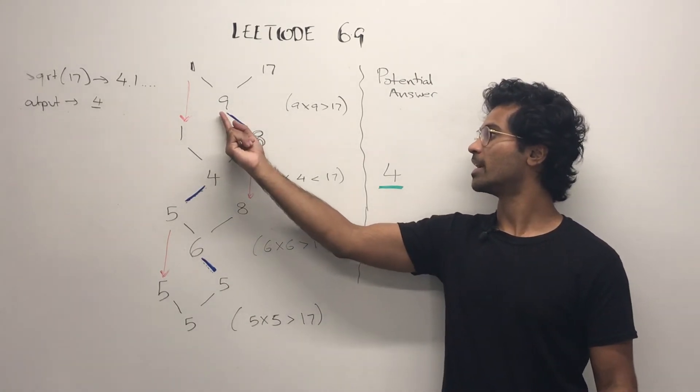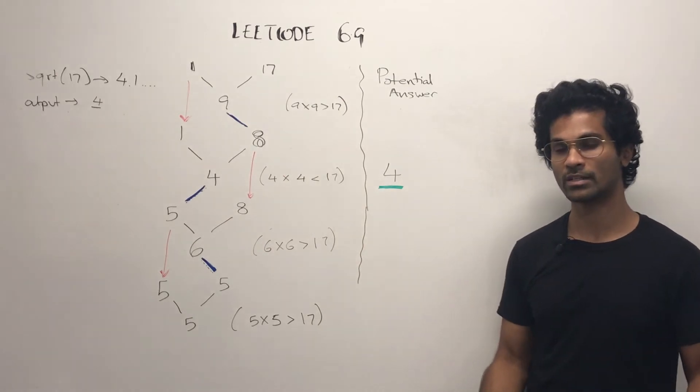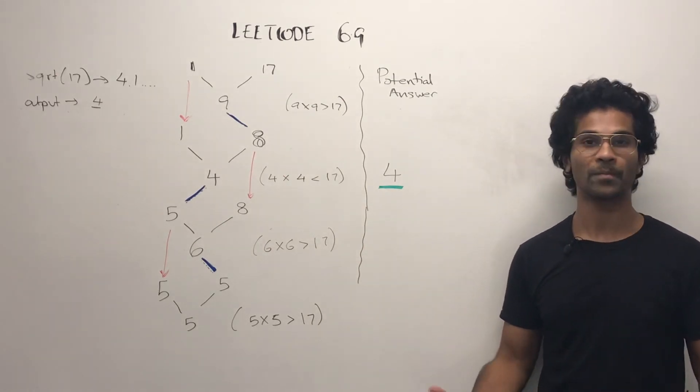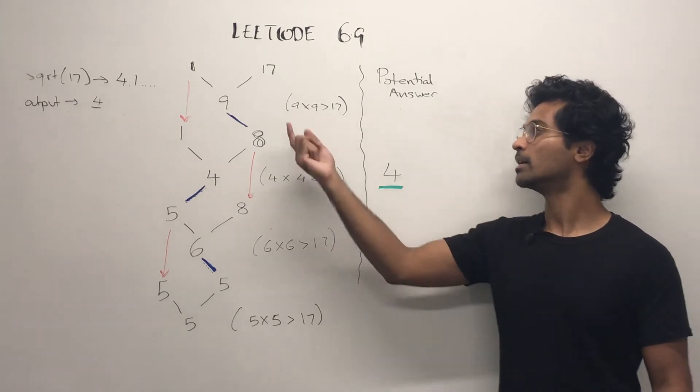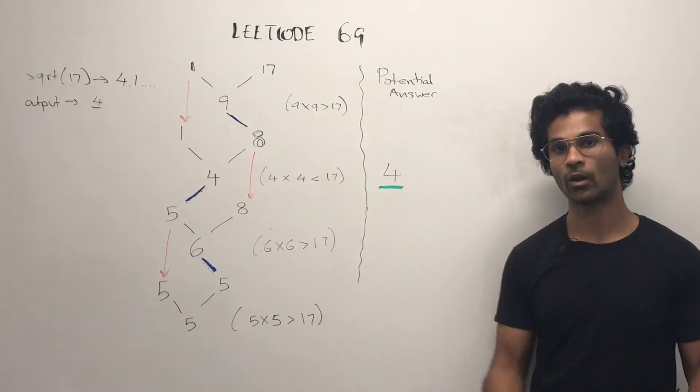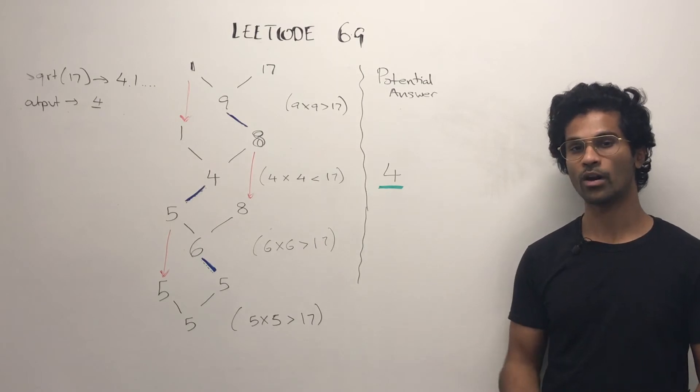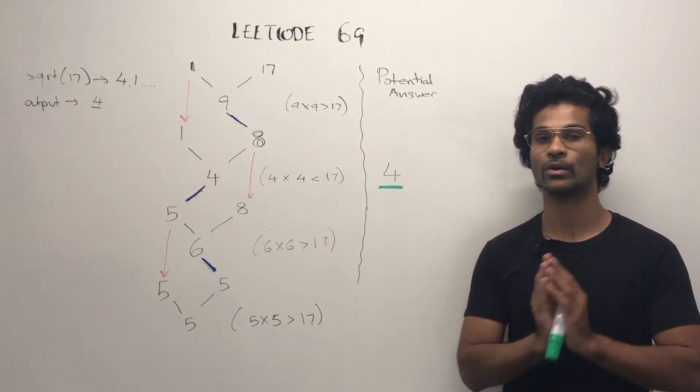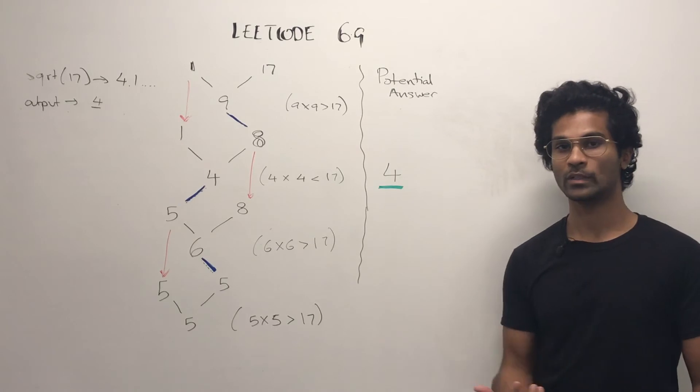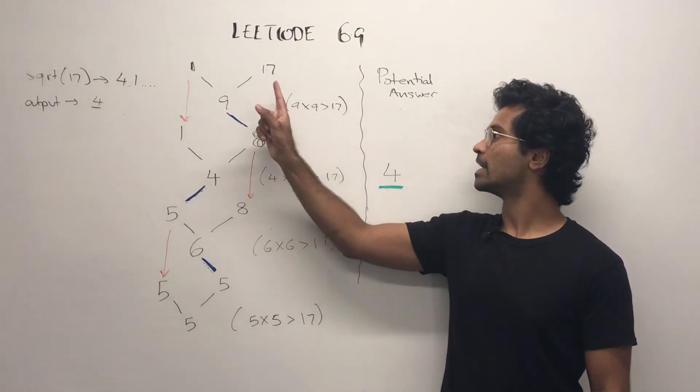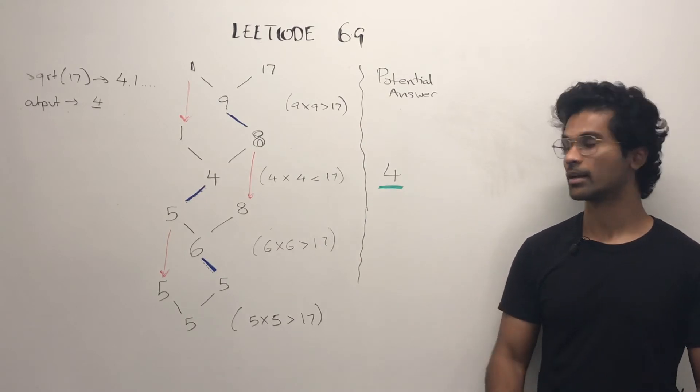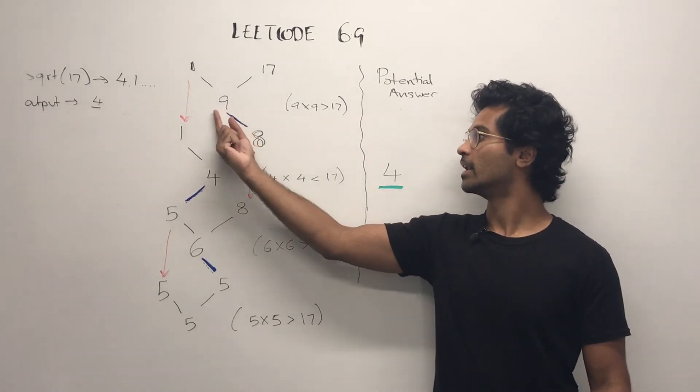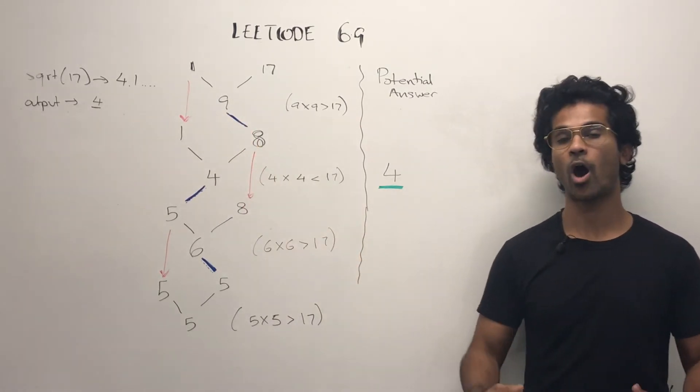First, we see, is 9 the square root of 17? How can we check? Simple. Just multiply 9 by itself and see if it's equal to the original number. No it's not, and it's larger. 9 times 9 is 81. So what we have to do is decrease our guess. How do we do that? We take our upper limit and reduce that. So we're going to say 9 minus 1 is our new upper limit.